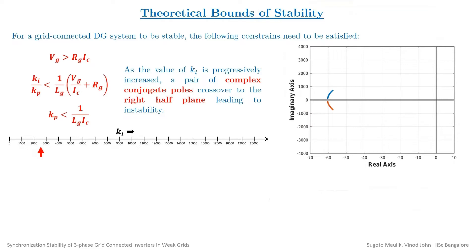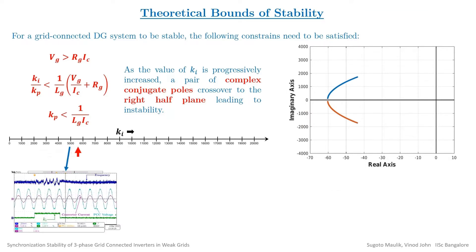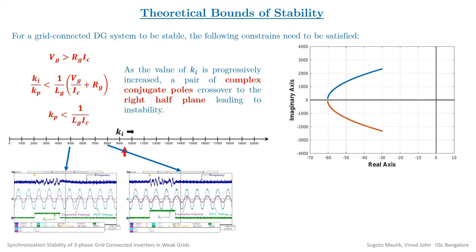For the grid-connected system to be stable, the following constraints on the PLL parameters KP and KI need to be satisfied. It can be shown that as the value of KI is progressively increased, a pair of complex conjugate poles of the system cross over to the right-half plane leading to instability. This is also verified using hardware results as shown below.